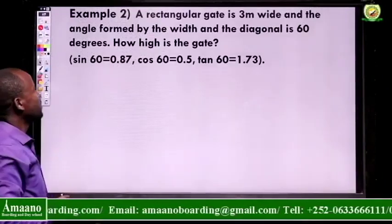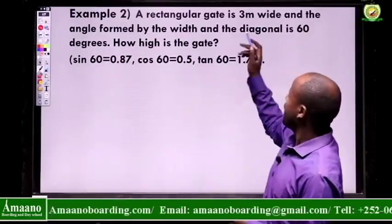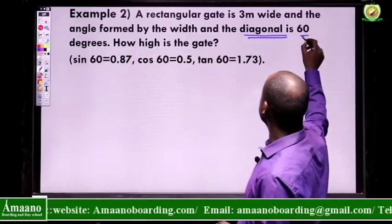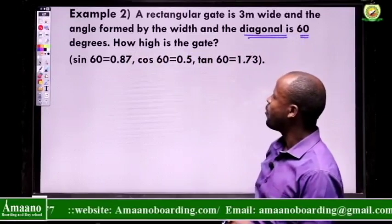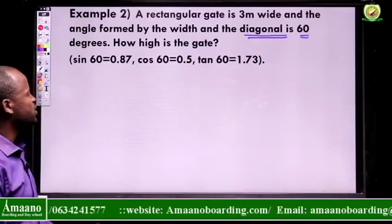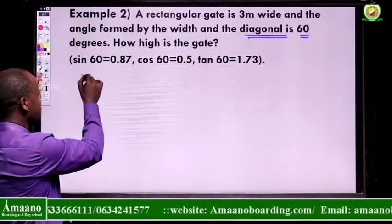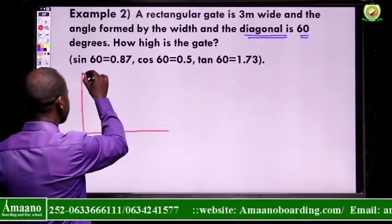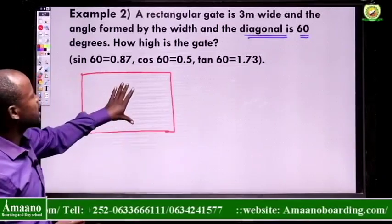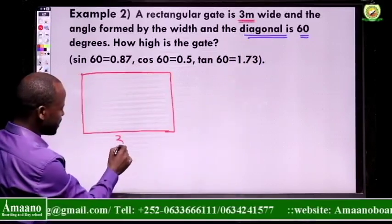Now the second example: a rectangular gate is 3 meters wide. The angle formed by the width and the diagonal is 60 degrees. How high is the gate? This is a real-life problem we'll solve using trigonometric ratios. Draw the rectangular gate — its width is 3 meters.